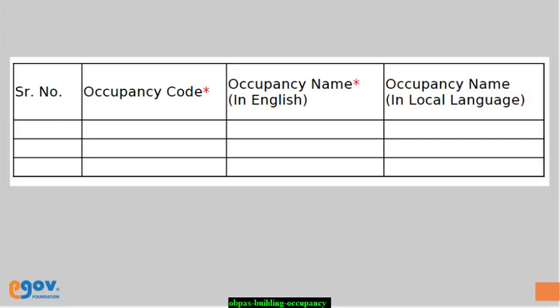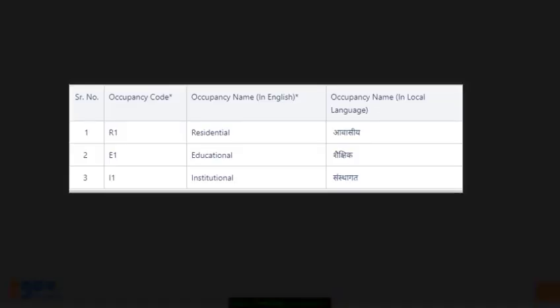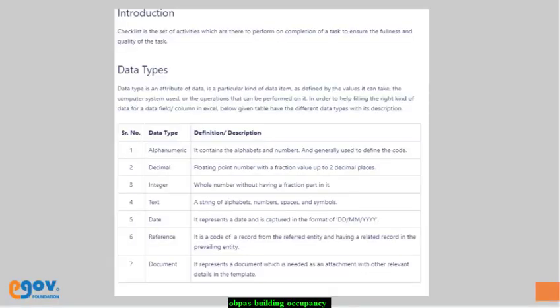Columns marked with a star are mandatory and cannot be left blank. Identify the different OBPAS building occupancy details before you start filling the template. After filling the data into the template, use the checklist to ensure the data filled is accurate by going through each and every checklist entity and comparing the data.